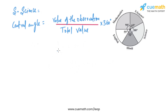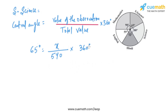Now let's move on to Social Science. The central angle is 65 degrees. So, 65 degrees equals x, the marks obtained in Social Science, divided by 540, multiplied by 360 degrees. Solving this, the marks obtained in Social Science is 97.5.